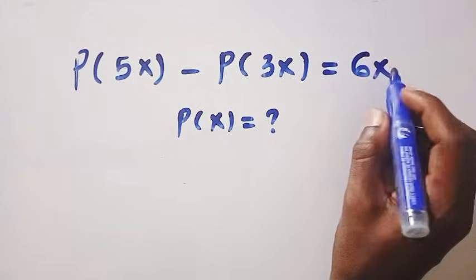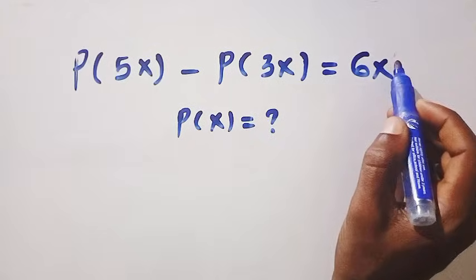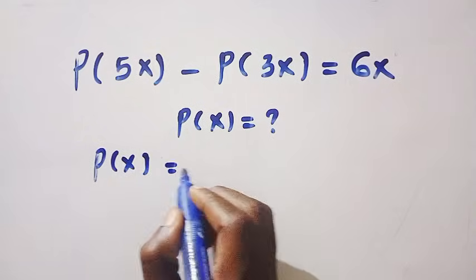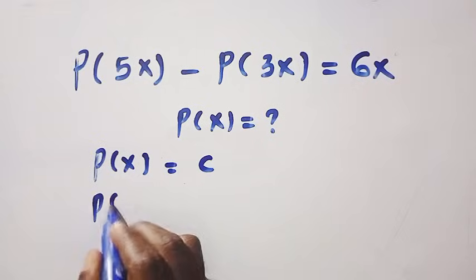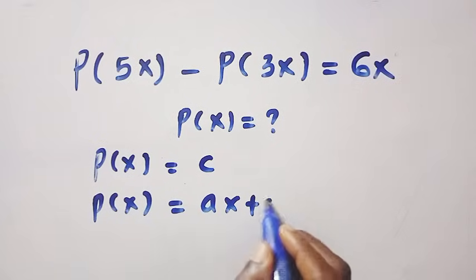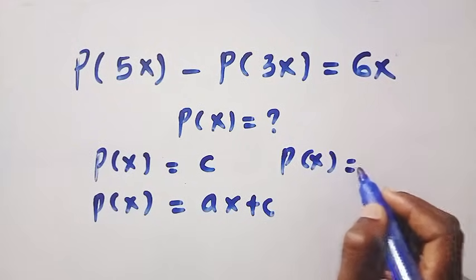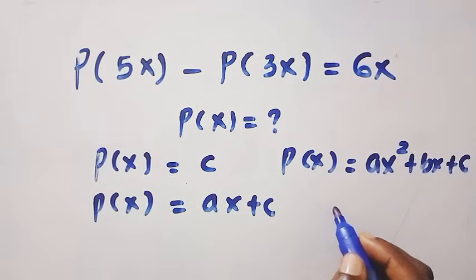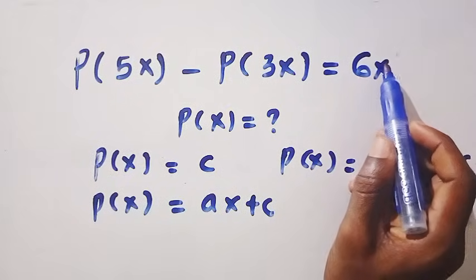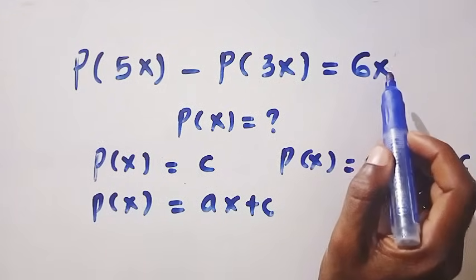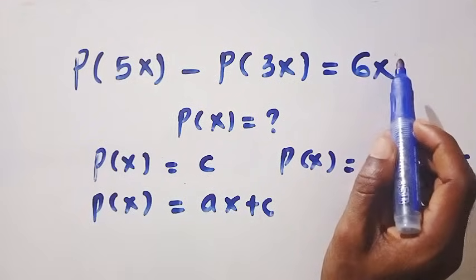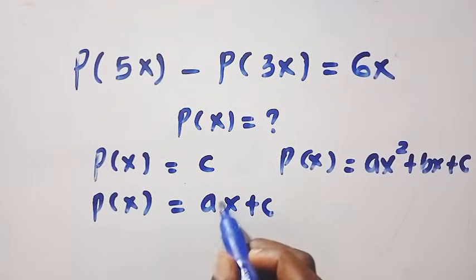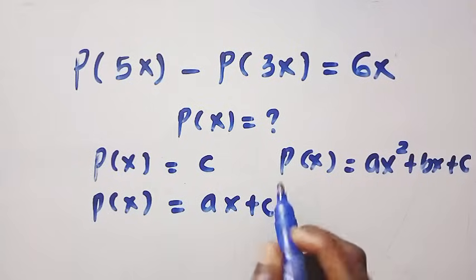Looking at what we have here, we have 6x where the power of x is 1. We cannot just assume that P(x) equals a constant or that P(x) is a quadratic. We have to be general, in case the power is not 1 — suppose the power is 2, power is 3, or more. So we cannot just start assuming any general polynomial form arbitrarily; we have to approach this in a robust way.